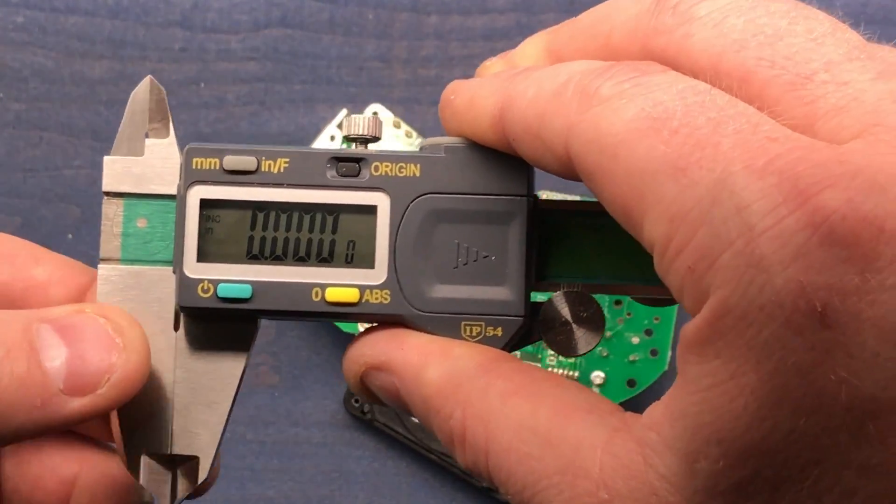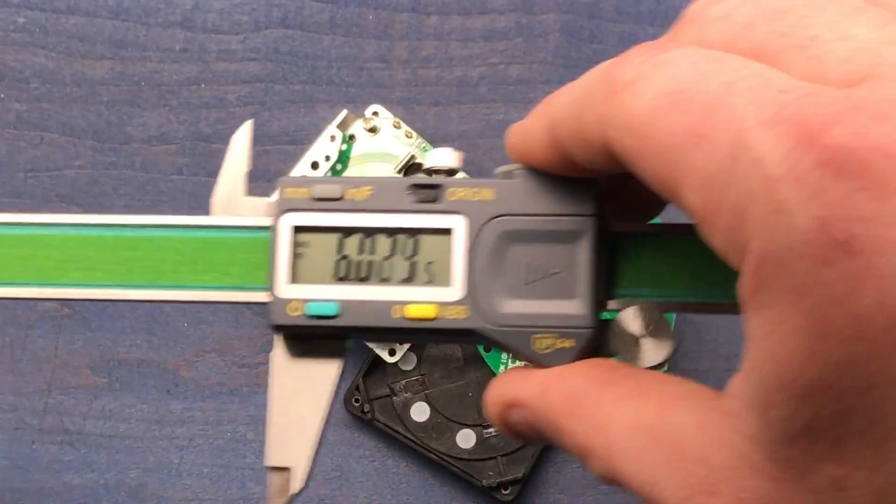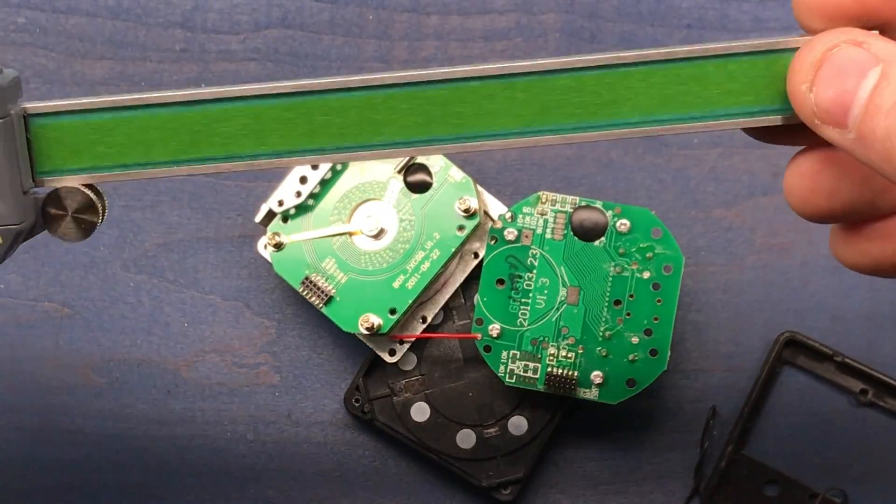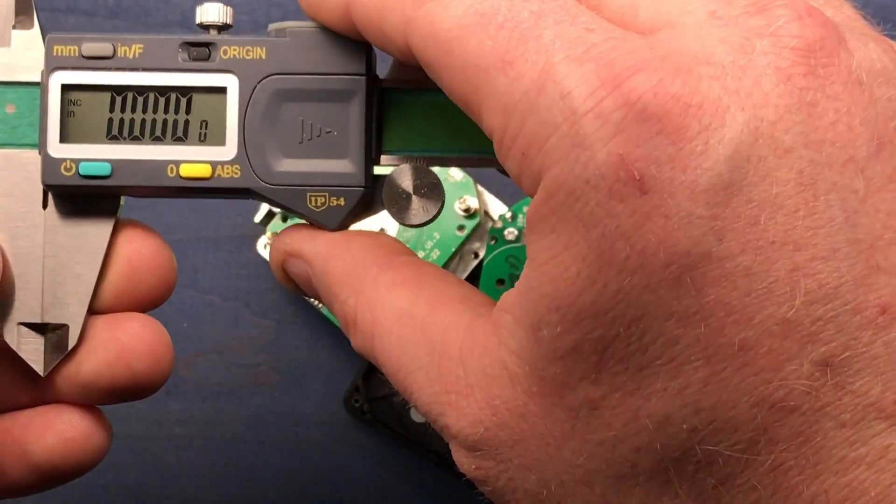But if any moisture gets in here, which is why they use this glass here to kind of insulate the copper, if any water, moisture, or grease gets onto these scales, it's going to affect the readings.